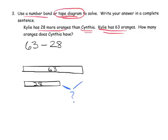And we can make this problem a little bit simpler by adding 2 to each tape diagram. Because when we add 2, yes, we change the length of each of those tape diagrams, but the gap stays the same. So our answer stays the same. So instead of doing 63 minus 28, we're really doing 65 minus 30. And 65 minus 30 is 35. And that's our answer. So we would say in a complete sentence, we would say Cynthia has 35 oranges.